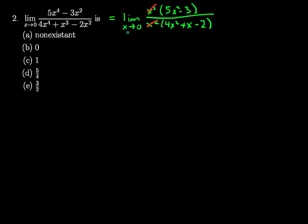And from there we can see that this is actually equal to the limit as x goes to zero still of 5x cubed minus 3. Sorry, 5x squared minus 3 divided by 4x squared plus x minus 2.